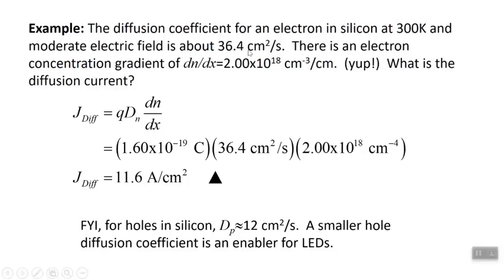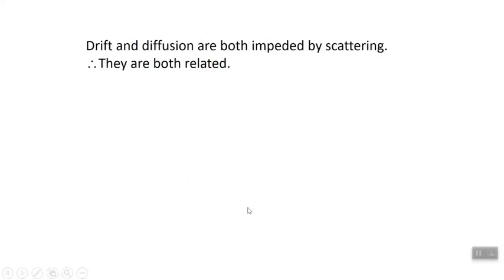The diffusion coefficient for electrons in silicon is 36.4 cm²/s. The diffusion coefficient for holes in silicon is about one-third of that — 12 cm²/s — and that is the unit for diffusion coefficient: centimeters squared per second. This is really important when we get to LEDs in Chapter 4: the fact that the hole diffusion coefficient is considerably smaller than for electrons enables the functioning of LEDs. There is also a relationship between hole or electron mobility and the corresponding diffusion coefficient.